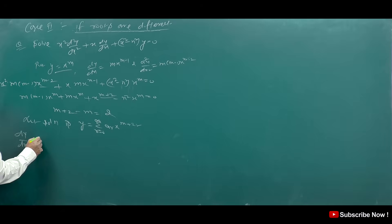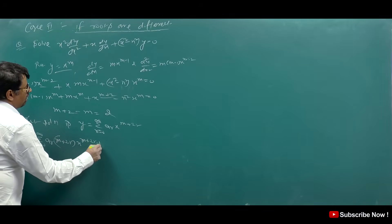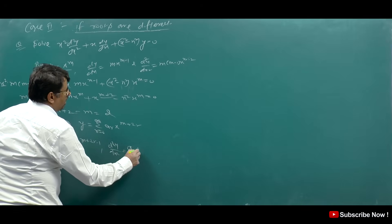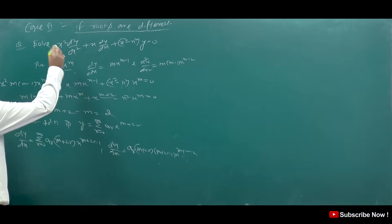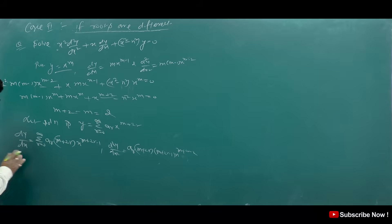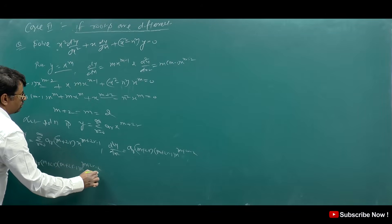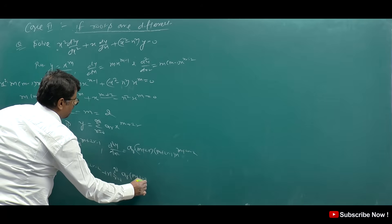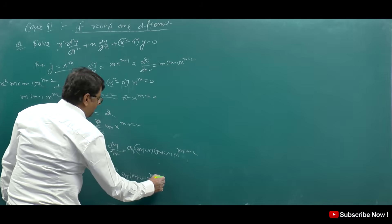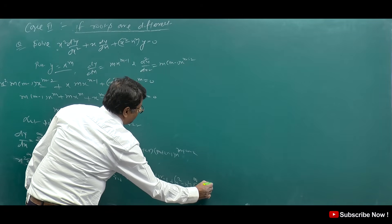Now we compute d²y/dx² from this solution: it gives Σ aᵣ·(m+2r)(m+2r−1)·x^(m+2r−2). We substitute all values back into the equation. So: x²·Σ aᵣ(m+2r)(m+2r−1)·x^(m+2r−2) + x·Σ aᵣ(m+2r)·x^(m+2r−1) + (x²−n²)·Σ aᵣ·x^(m+2r) = 0.